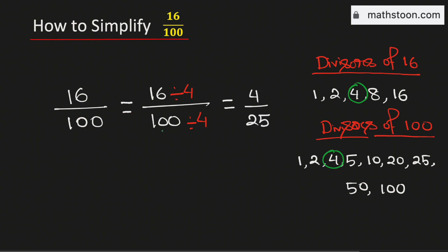So, 16 over 100 simplified is equal to 4 over 25. And this is our final answer.